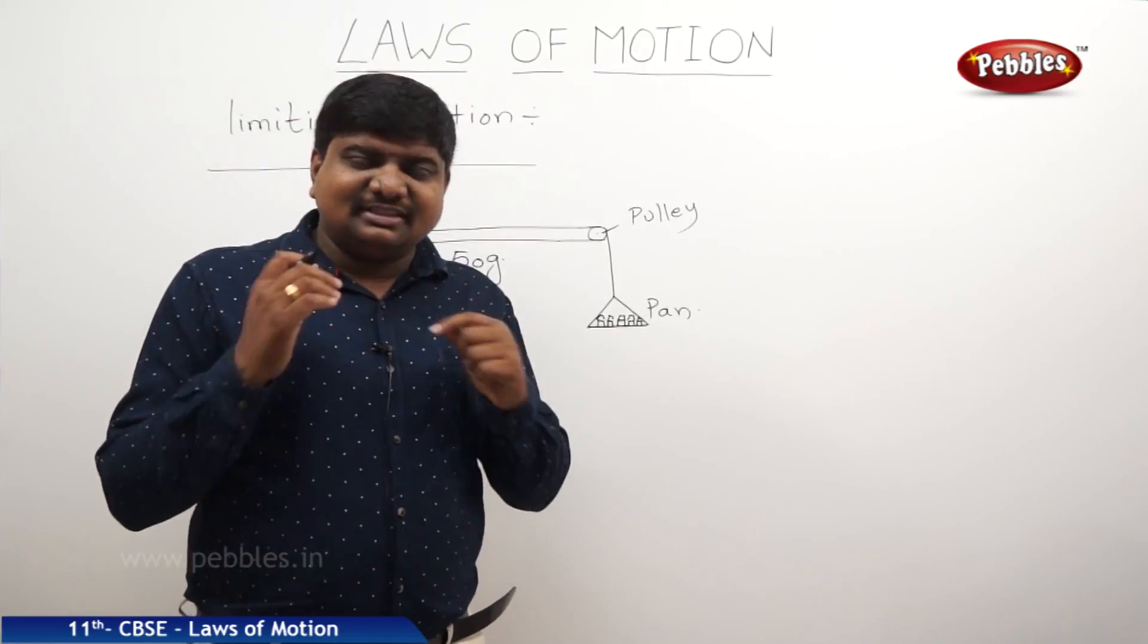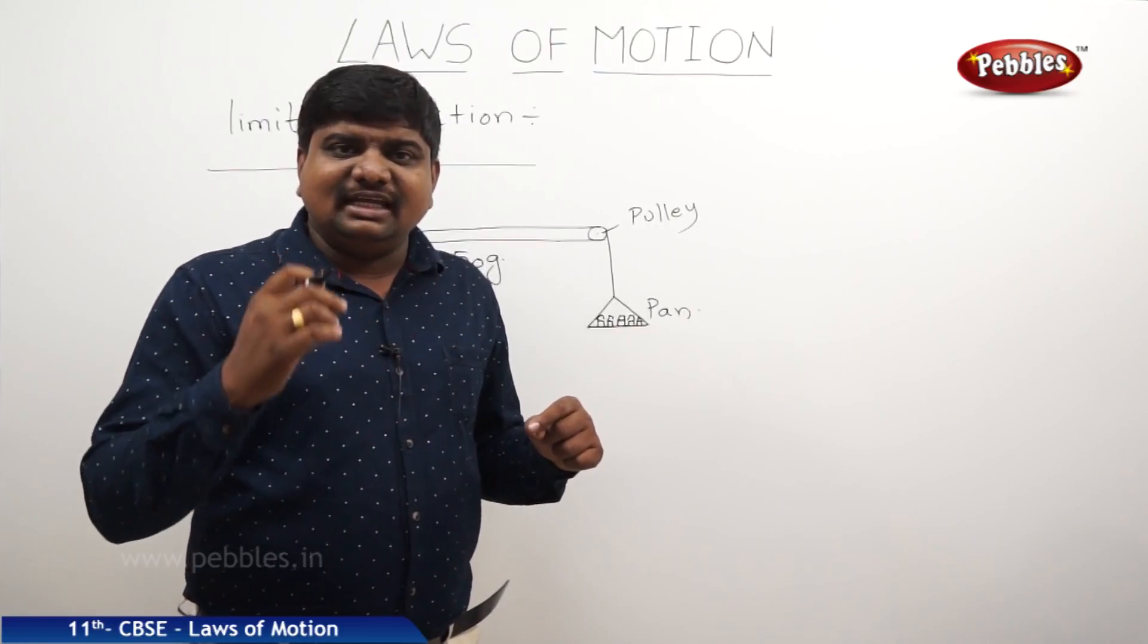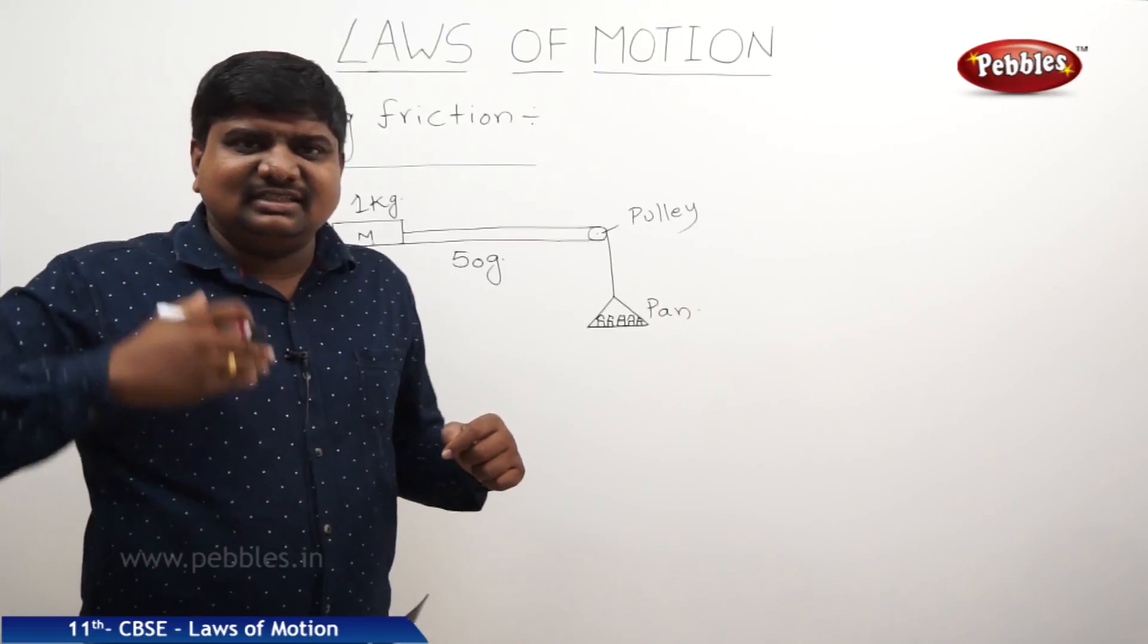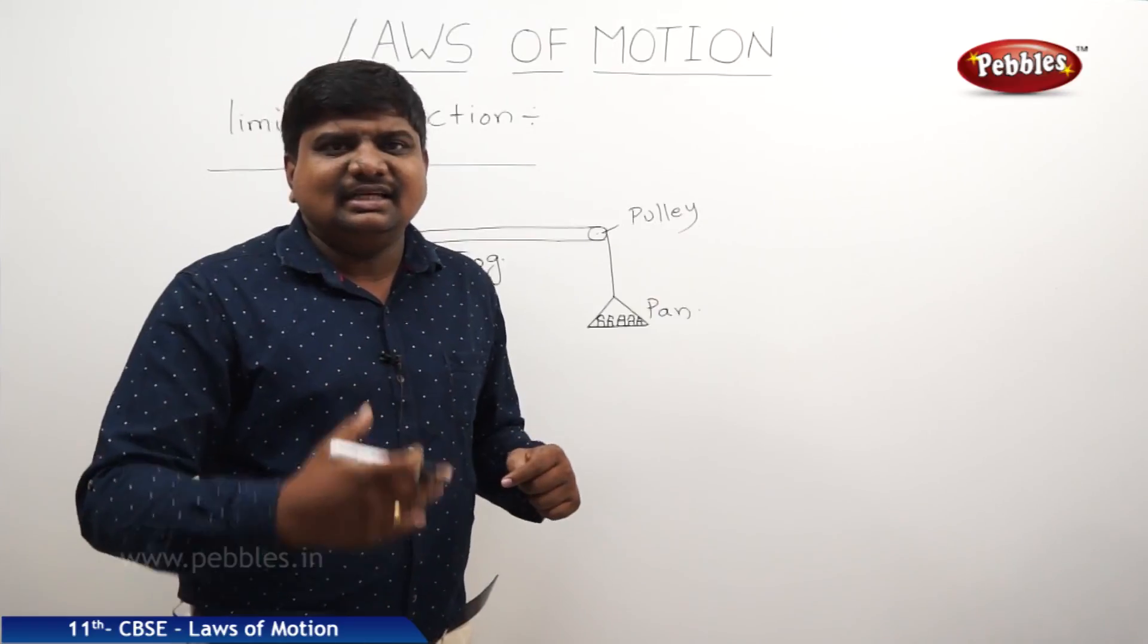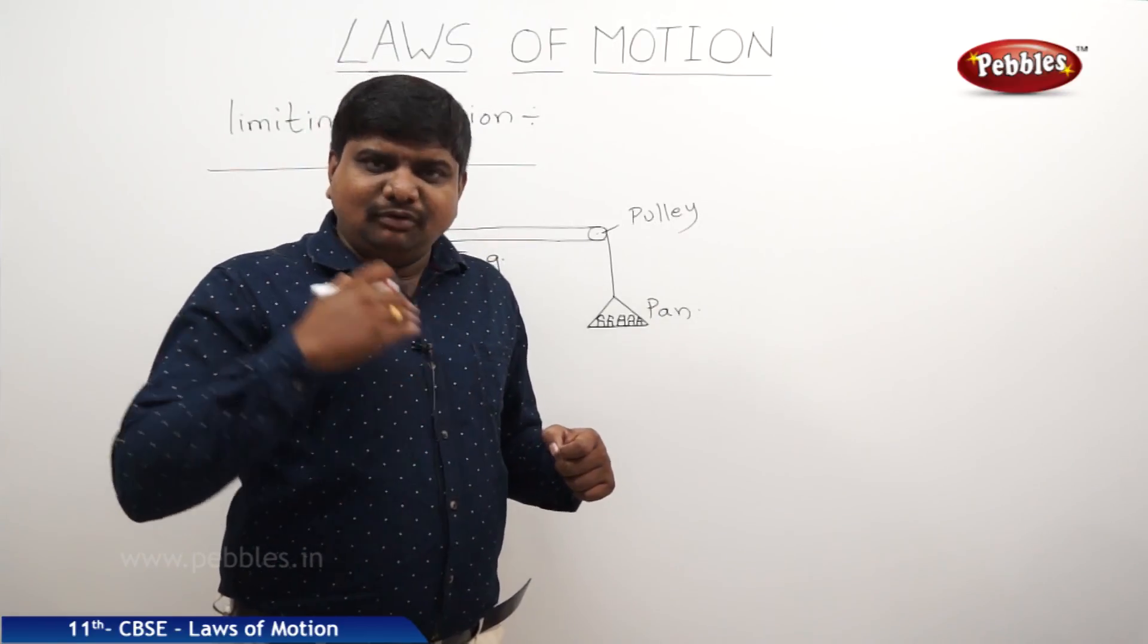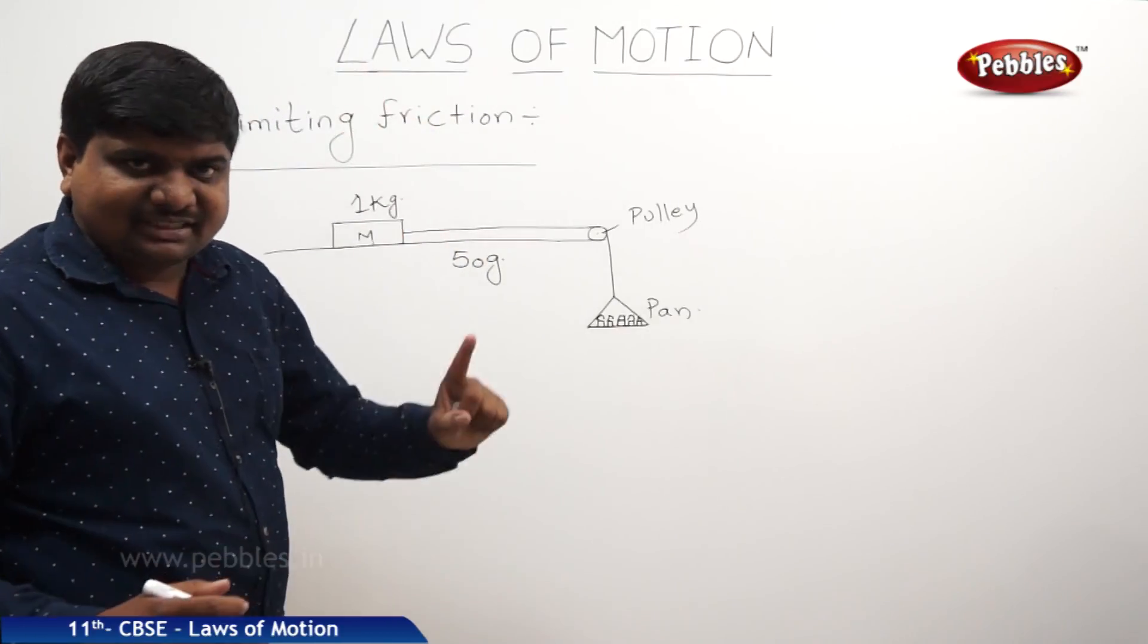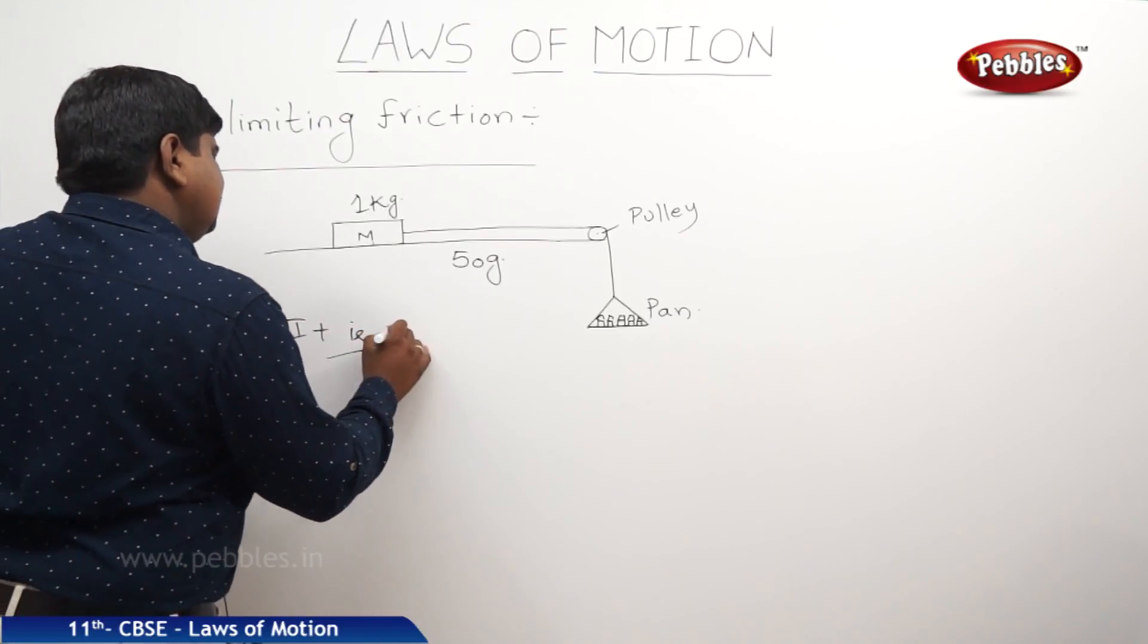So the limiting friction is nothing but a maximum static friction which comes into play whenever a body is just at a verge to move on, means it is just going to start or about to start before that motion starts. What is the maximum magnitude of the static friction? That amount of the static friction which is in the maximum range is called limiting friction. It is the maximum static friction.